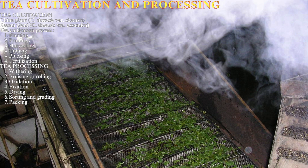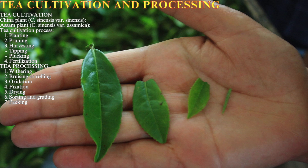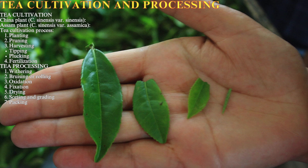Step five is drying: the tea leaves are dried to remove any remaining moisture, either naturally in the sun or mechanically using ovens or dryers. Step six is sorting and grading: the dried tea leaves are sorted and graded according to their size, color, and quality. Step seven is packing: the finished tea is packaged for storage and distribution.